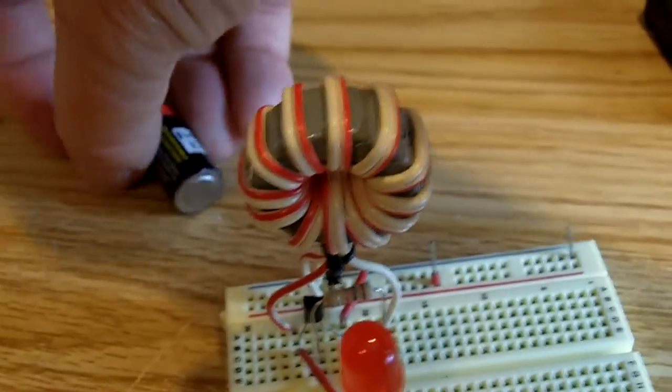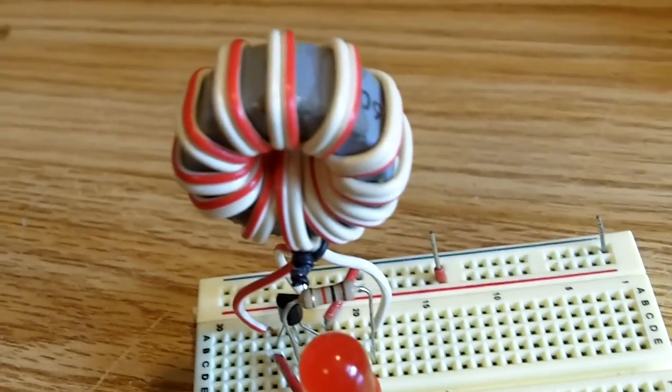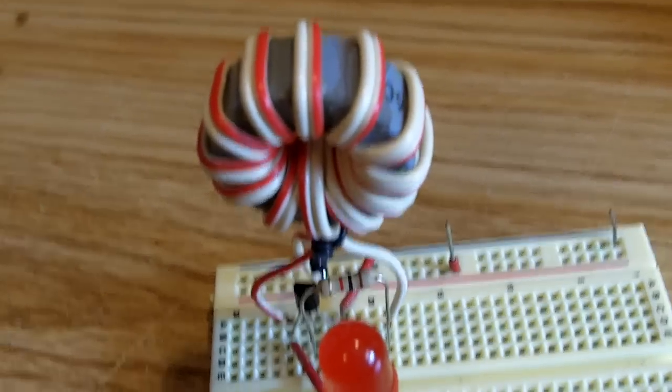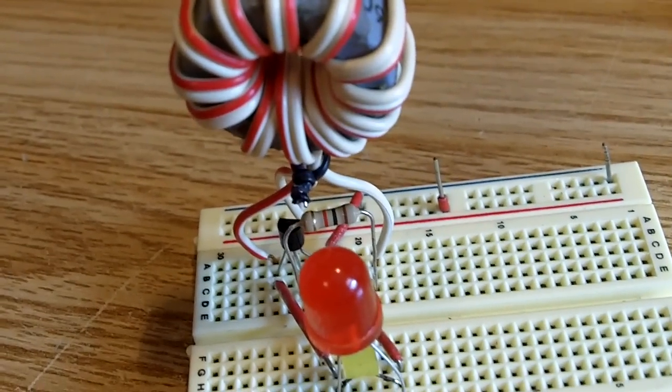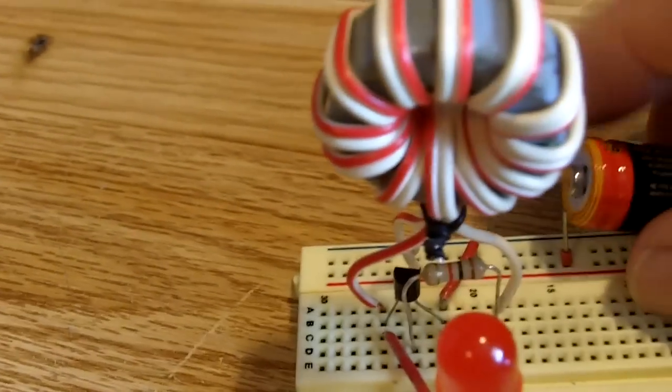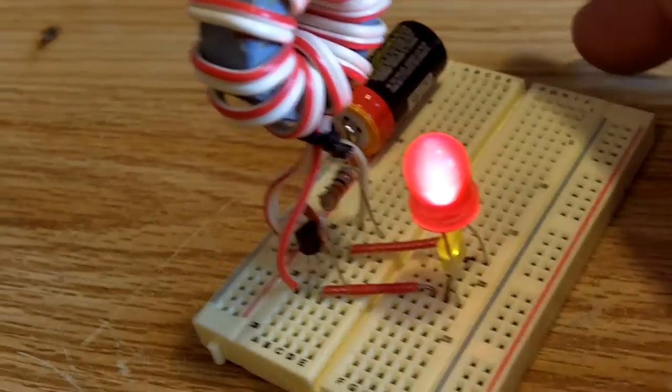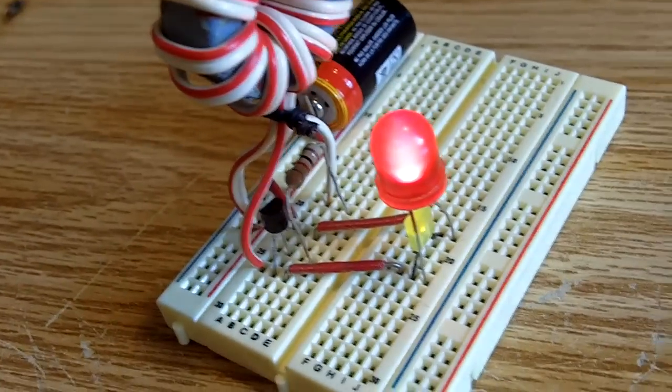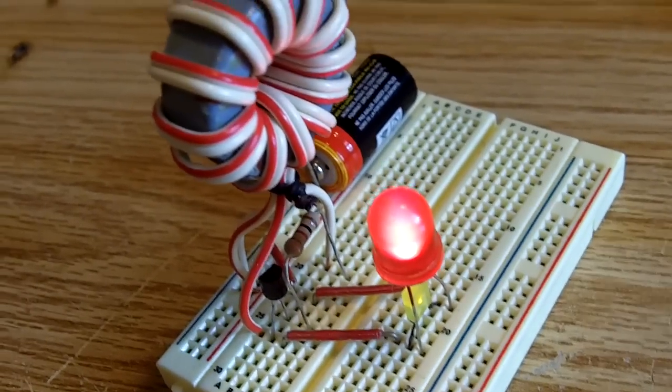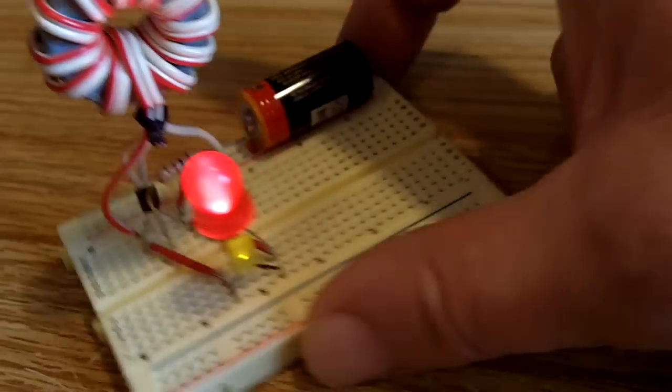The toroid here I got from an old TV, I don't remember what, maybe it was an old radio. Anyway, I put it together on there and a little tiny battery here. You can see it works quite well. There really isn't a whole lot to it, just a resistor, a transistor and a LED and a toroid, a little wire. It works pretty neat, it works pretty good.